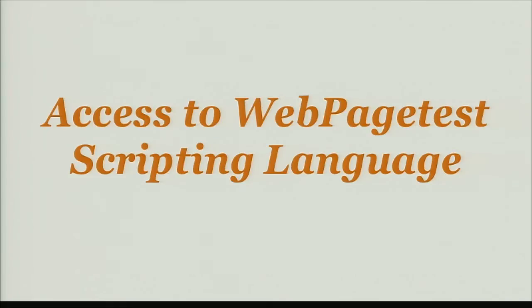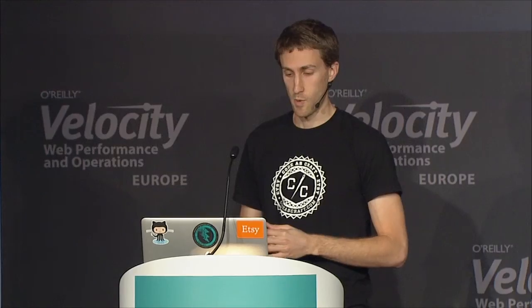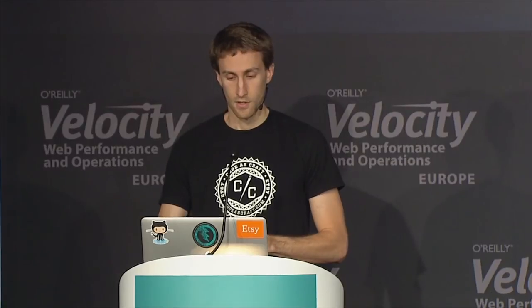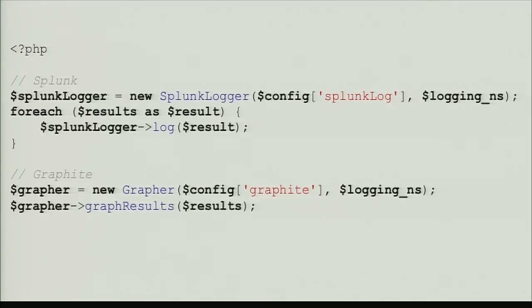It's important to note that you do have full access to the entire WebPageTest scripting language. Pat's built a pretty robust scripting language into WebPageTest, and you can very easily configure WPT Script to leverage the scripting and run any arbitrary test you want. Let's dive a little more into gathering the results. The code for this is very simple. Right now we have set up a Splunk logger and a Graphite logger, and all we do is initialize these classes and then simply log the results out. This results variable is simply coming back from the WebPageTest API, and it's pretty easy to extend this and add any logger that you want.